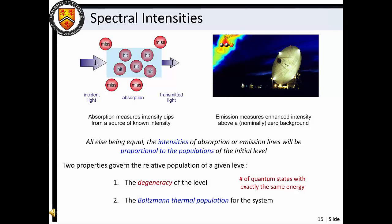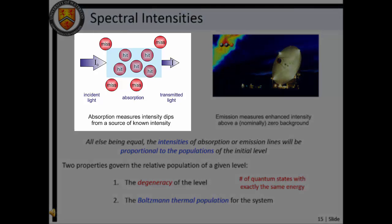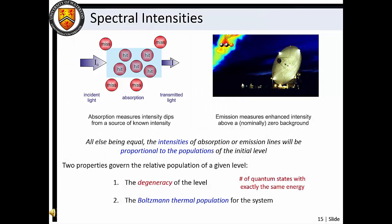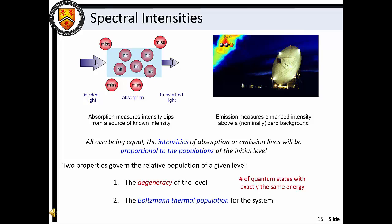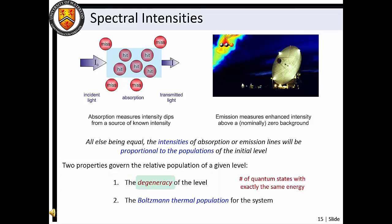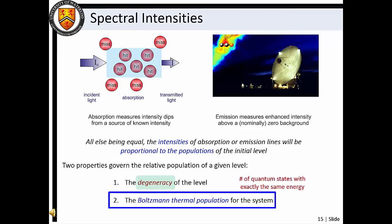To this point in Chemistry 209, we have focused predominantly on understanding transition frequencies. In Masterclass 0, the importance of spectral intensities was also highlighted. In absorption experiments, we measure the relative amount of light absorbed by a sample as a function of light frequency, typically done in reference to a light source of known intensity. For emission spectra, we measure the intensity of light emitted from an excited sample as a function of frequency, with measurements typically taken with reference to zero background. The intensities of absorption and emission lines are proportional to the populations of the initial quantum state. Two properties govern the relative populations of the initial quantum state: the first is level degeneracy, which is the number of quantum states with exactly that energy; the second is the Boltzmann thermal population of the ensemble.